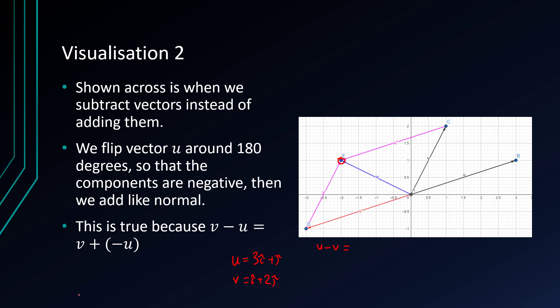So in doing v take away u, because u is being reflected, v minus u is v plus the negative of u. So v minus u is minus 2i plus j. And that's what it is, minus 2i plus j. So in remembering that v minus u is v plus the negative of u, that can visually show the subtraction of vectors.